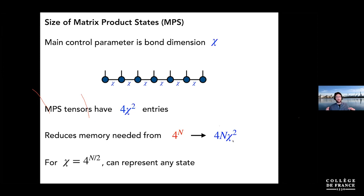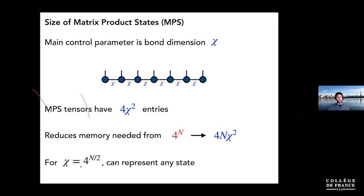Importantly, you haven't in principle given anything up — you can always represent any state by increasing chi more and more. You haven't made an uncontrolled approximation: if you take chi to be exponentially large, you can represent any state. But of course we don't want to do that because then we revert back to the exponential problem we were trying to avoid.